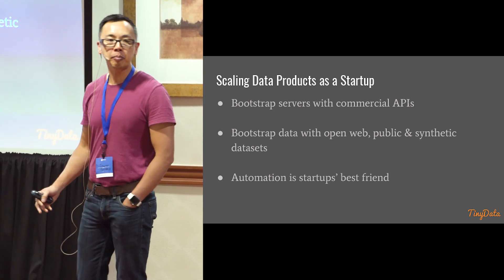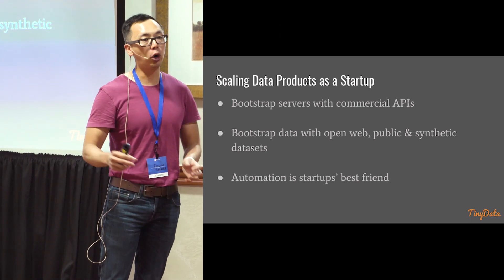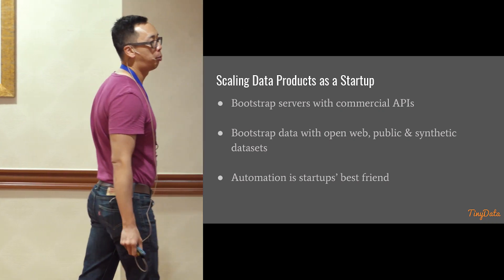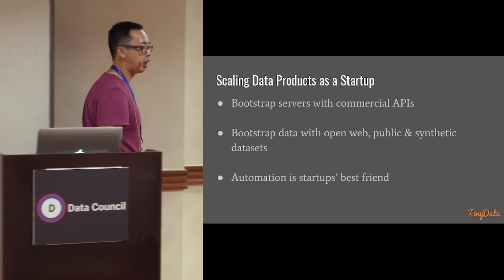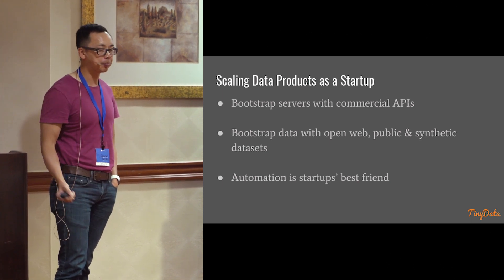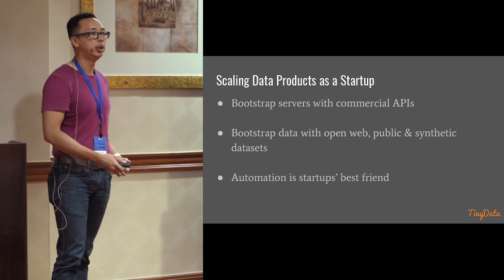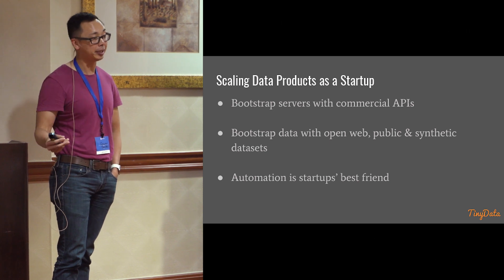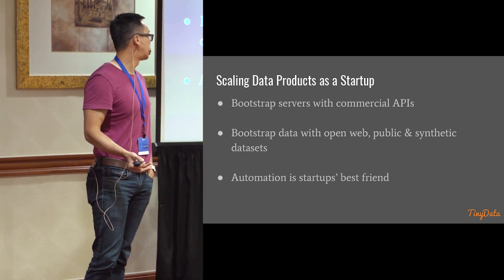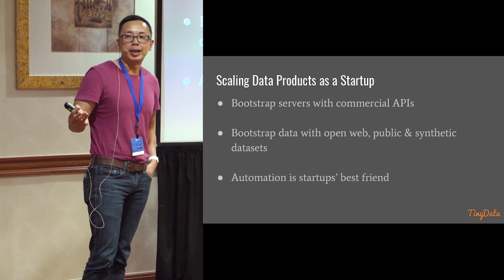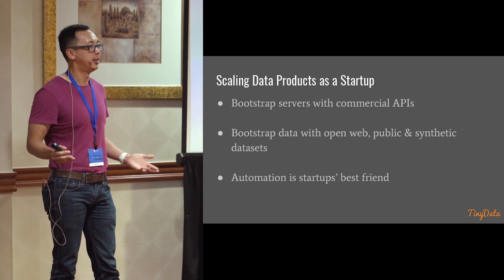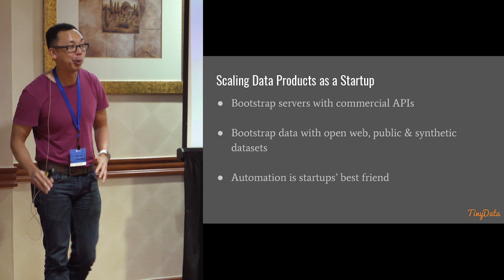For other domains popular in machine learning — whether credit scoring or other types of predictions — there's an increasingly large body of work around synthetic data generation. There was actually a talk yesterday from Andrew at Tonic about how to generate data. If you're a startup and you need data, it's out there on the web or you can make it. And finally, automation is really a startup's best friend. Kubernetes doesn't really care whether you are one person or a hundred people — you can launch a thousand servers with the same ease. As a startup, you just have to remember to shut them down, otherwise it's expensive.